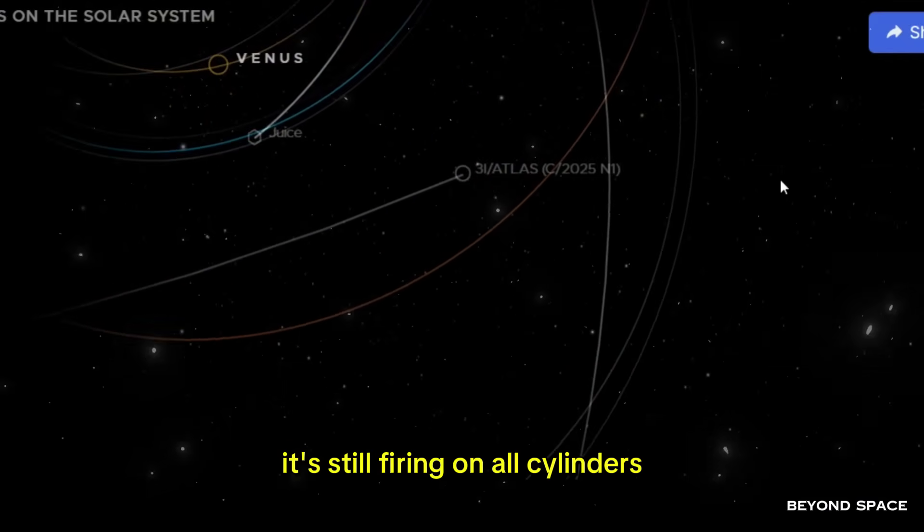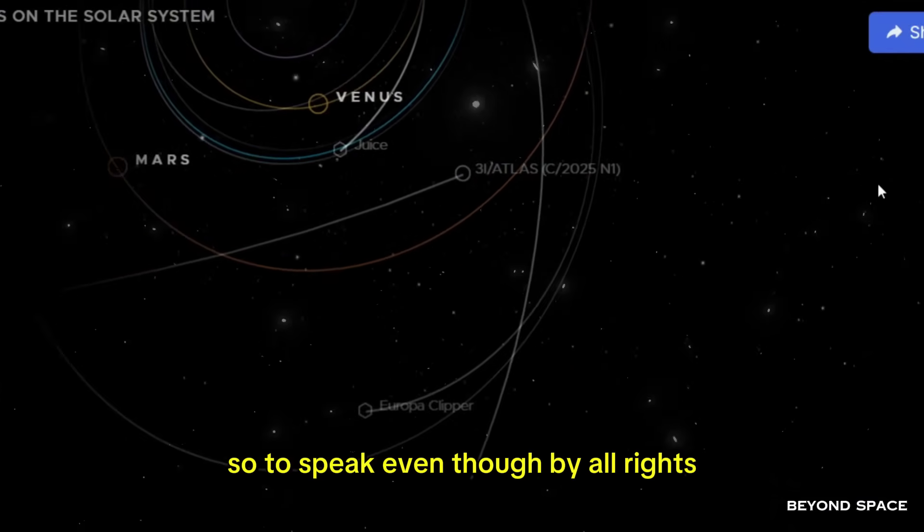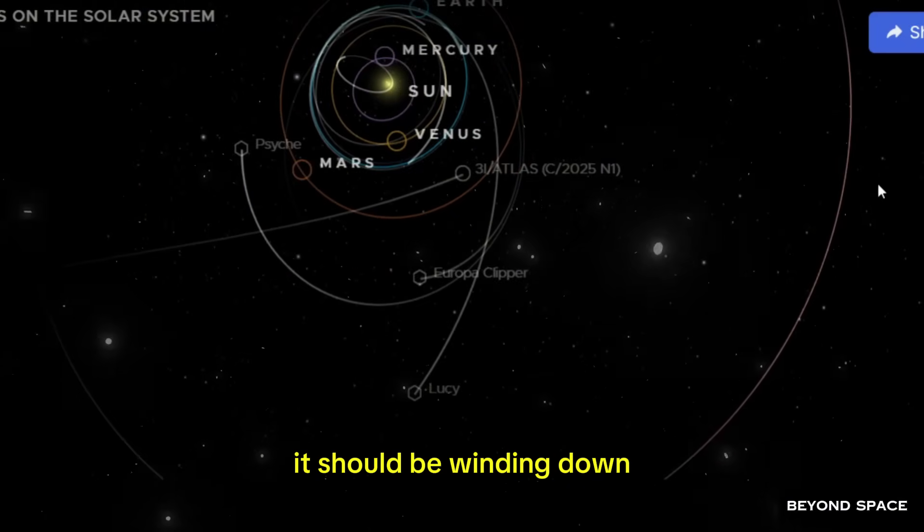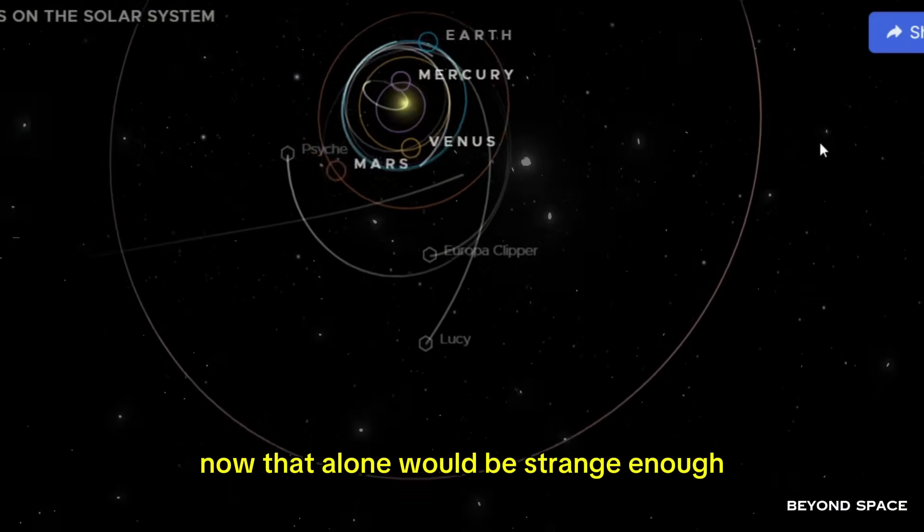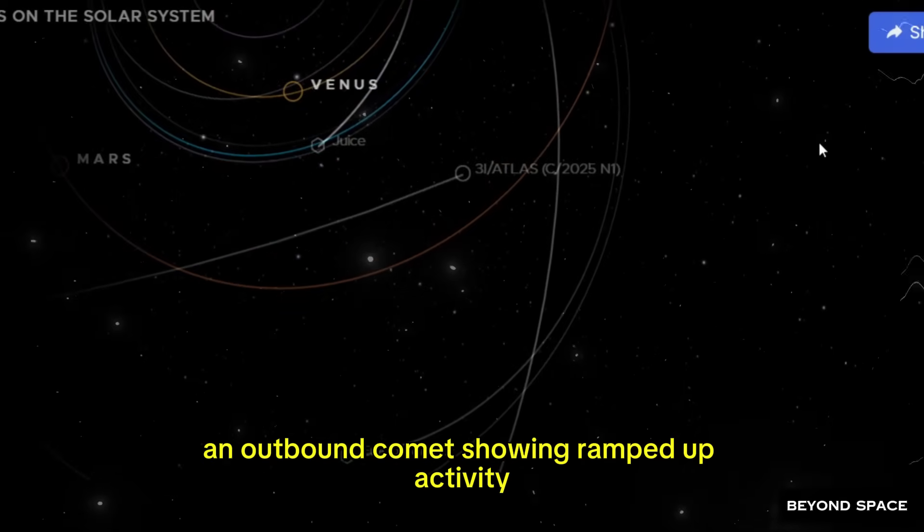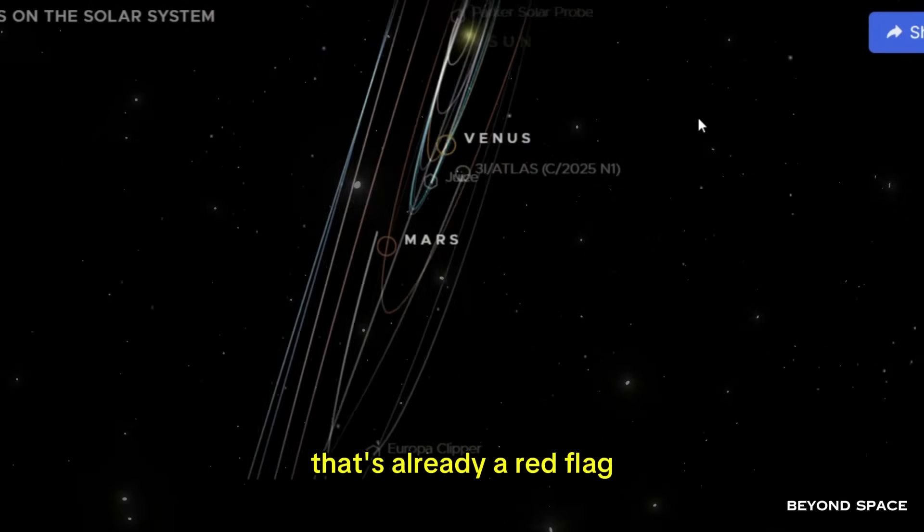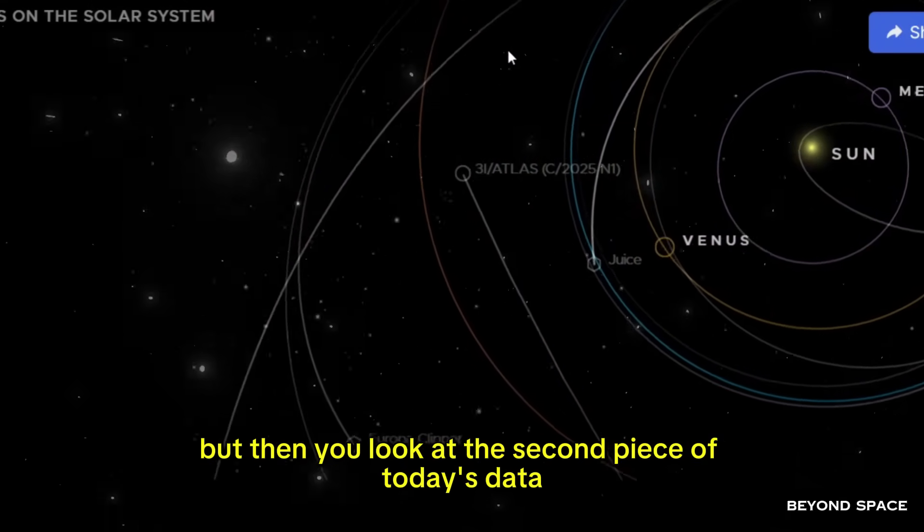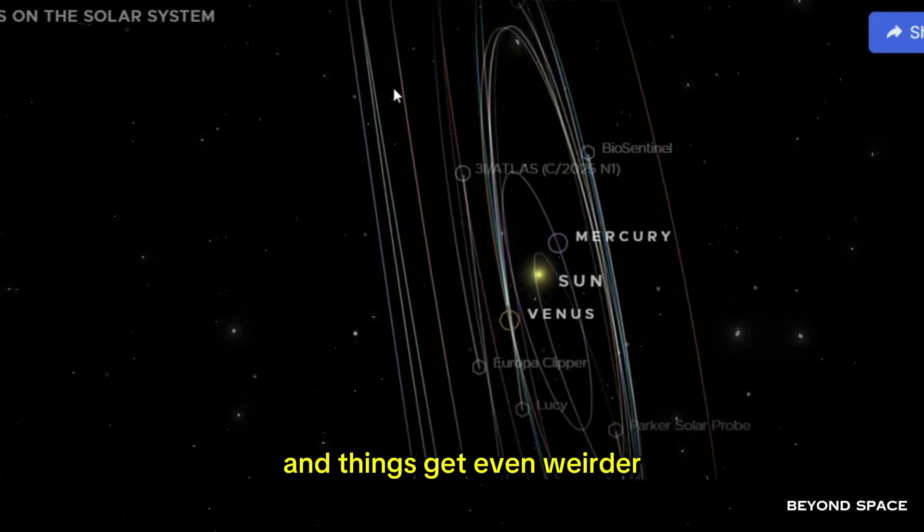It's not as high as it was at peak perihelion, which was that closest point to the sun. But it's high enough that you can't just dismiss it as measurement error, or a calibration issue, or random noise in the data. This comet is still actively pumping out material. It's still firing on all cylinders, even though by all rights, it should be winding down. That alone would be strange enough. An outbound comet showing ramped-up activity? That's already a red flag. But then you look at the second piece of today's data, and things get even weirder.